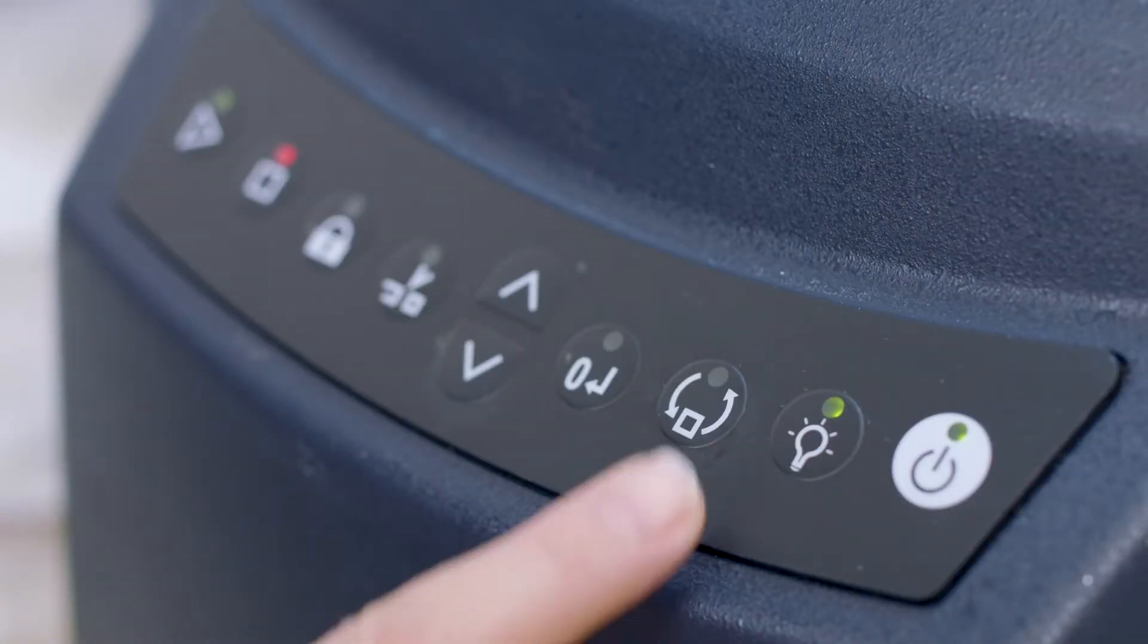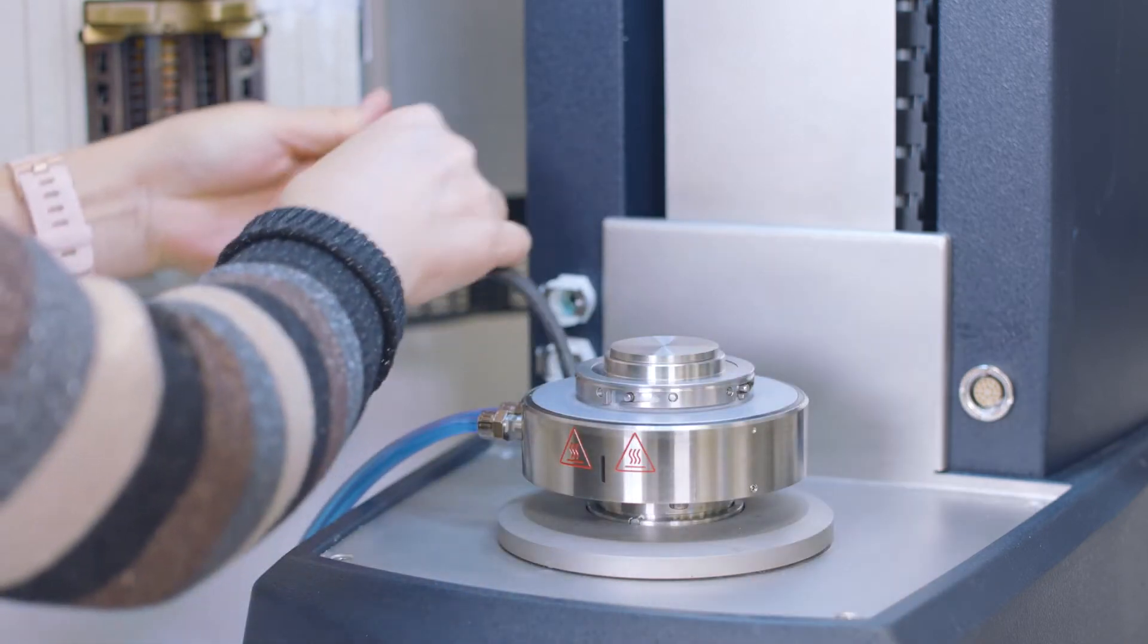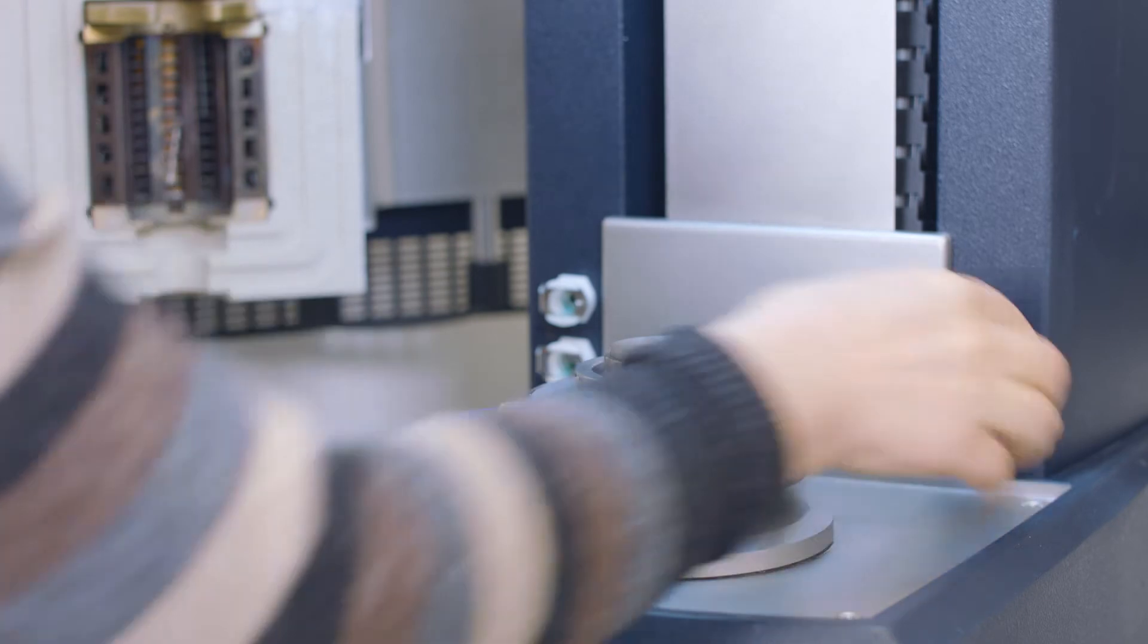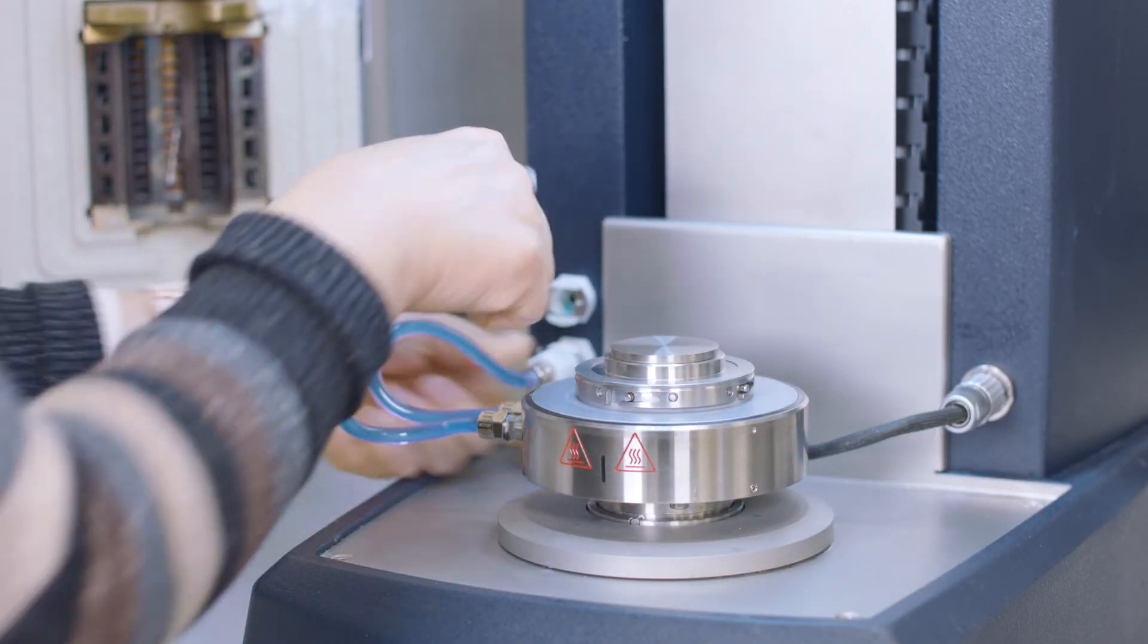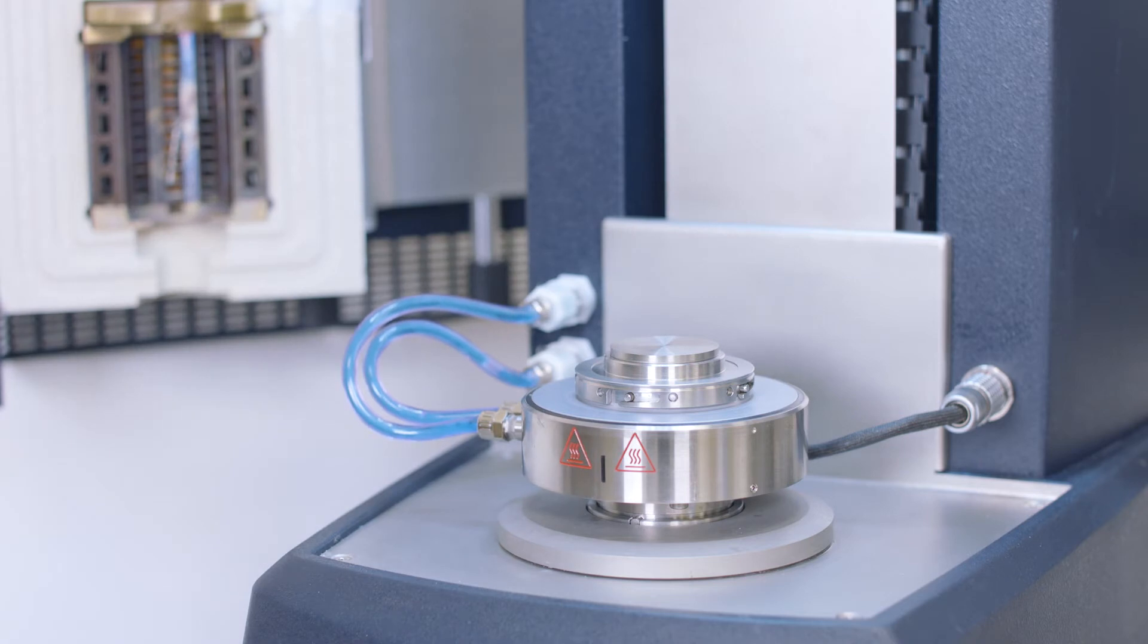From the instrument control panel, press this button to temporarily release the magnet. Put the Peltier onto the instrument bottom stage. Then, insert the SmartSwap plug with the red dot facing up. After that, plug in the circulating tubes and turn on the circulator.